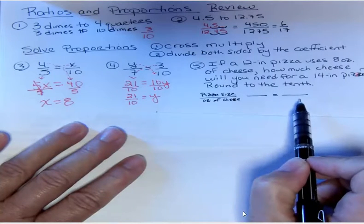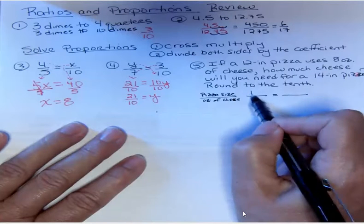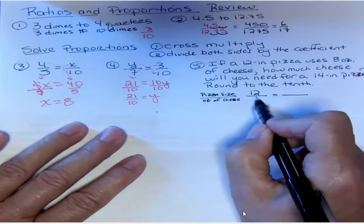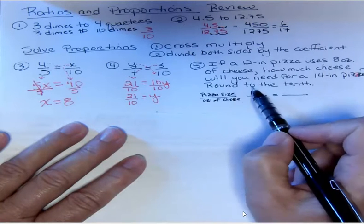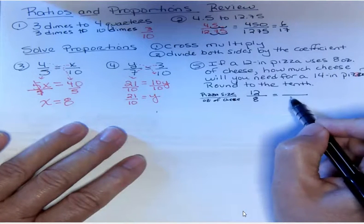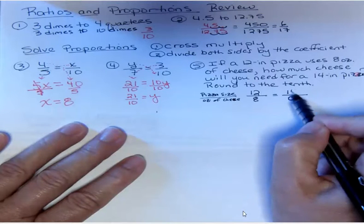So we have a 12-inch pizza that uses 8 ounces of cheese, and then how much will you need? How much cheese will you need? That's what we don't know. I'm going to call it C for a 14-inch pizza, so that 14 has to go on top because the pizza size was on the top.